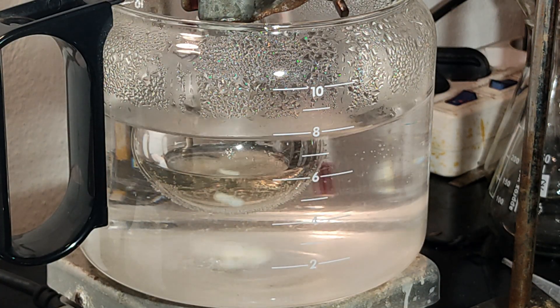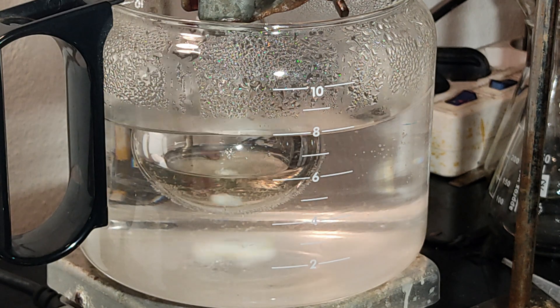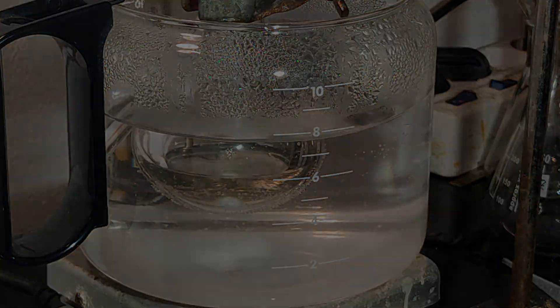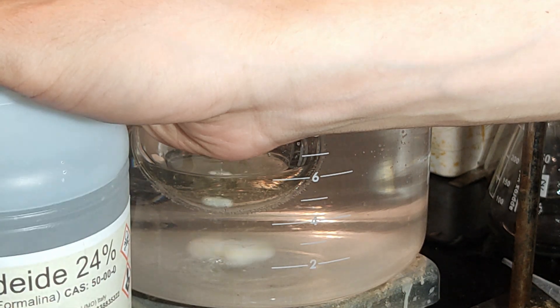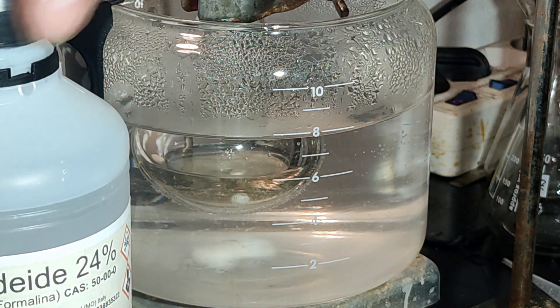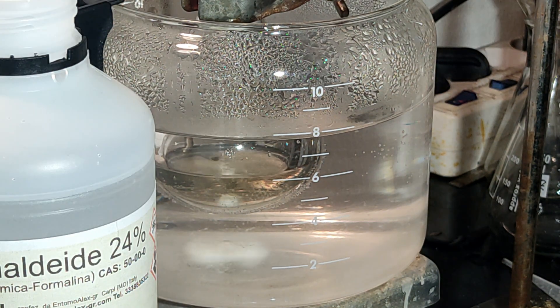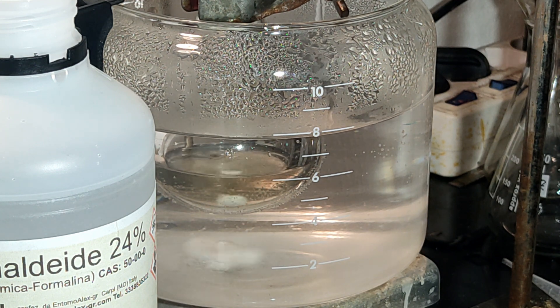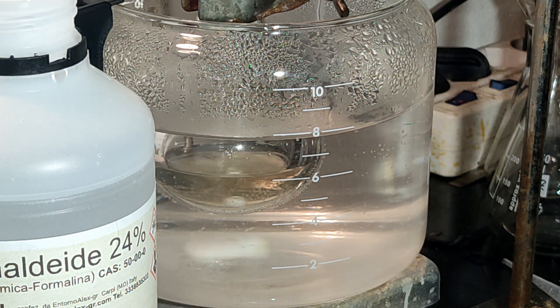This will make tryptophan soluble and the reaction mixture will turn from a murky suspension to a clear solution. To the sodium salt of the tryptophan solution, 0.8ml of 24% formaldehyde was added while the solution was kept at around 60-65°C.